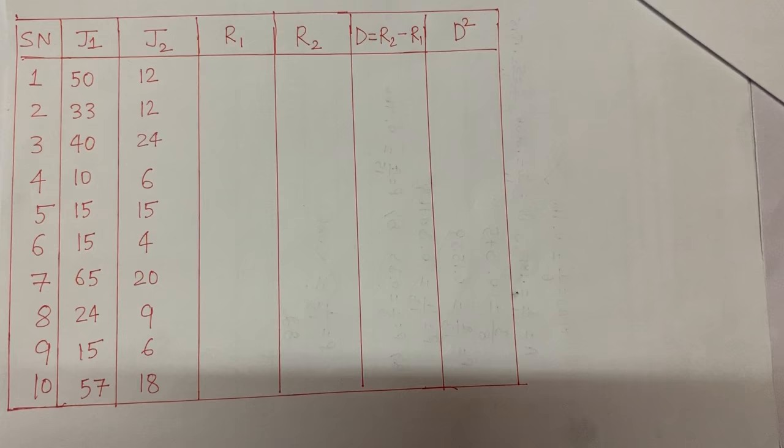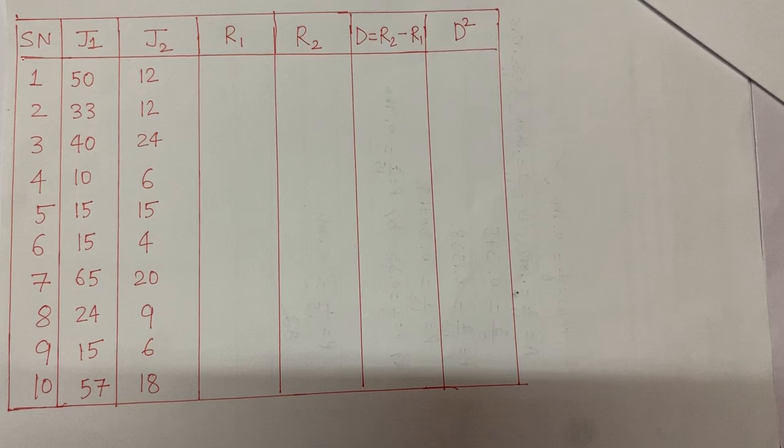Hello everyone. In this video I'll be talking about Spearman's rank correlation once again, but this will be a separate problem from my first video. In that first problem, there was no standoff between the ranks — the ranks were not tied anywhere. But this is the problem where ranks tie up and a standoff appears amongst the values.